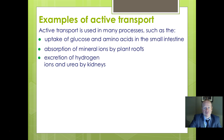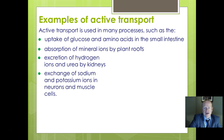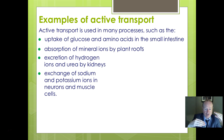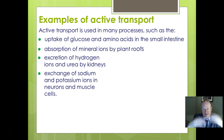Further examples include removal of hydrogen ions and urea in the kidneys, and exchange of sodium and potassium ions in neurons and muscle cells. You need to maintain a balance of charge, and to produce that electrical charge you get an imbalance between sodium and potassium ions, which is produced by active transport through particular pumps.